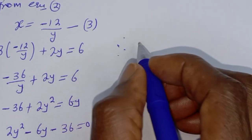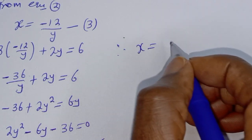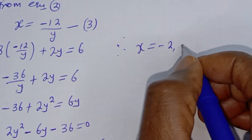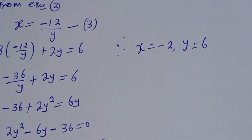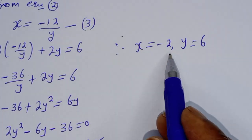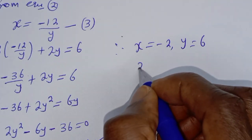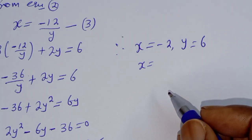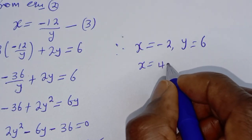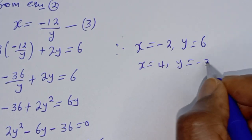Therefore, our final answers are: when x = -2, y = 6; and when x = 4, y = -3.